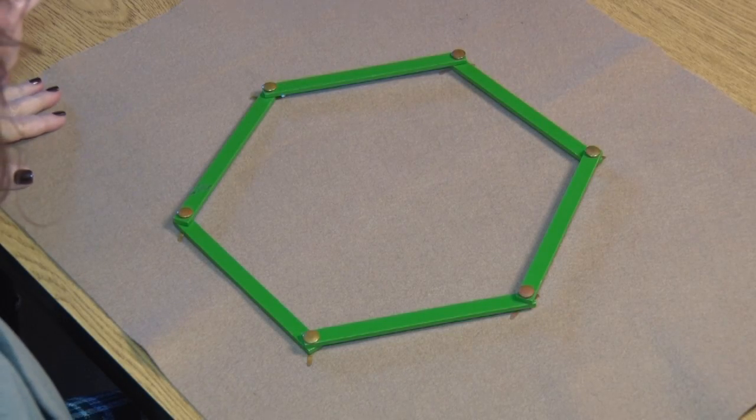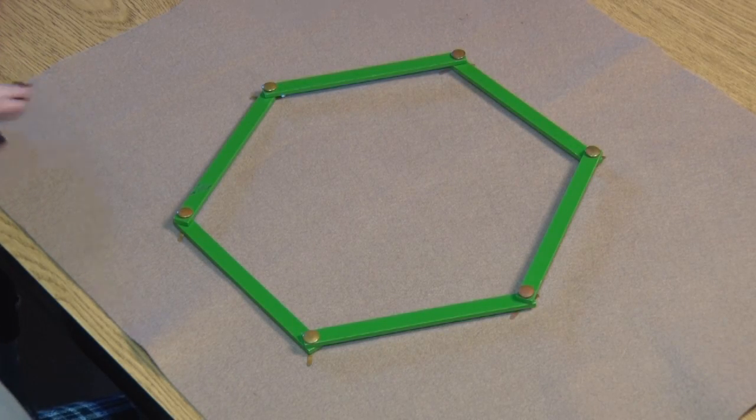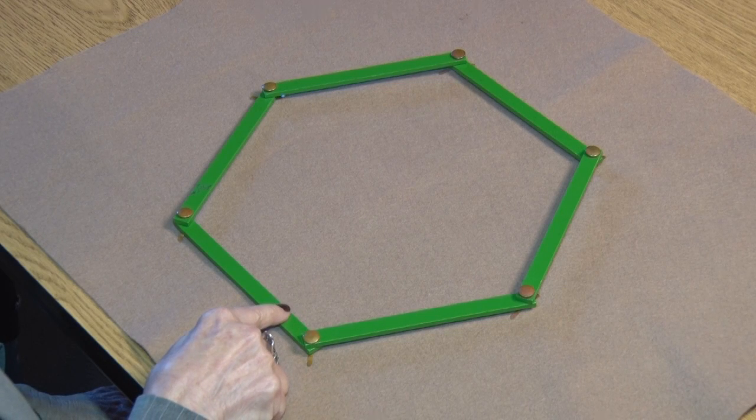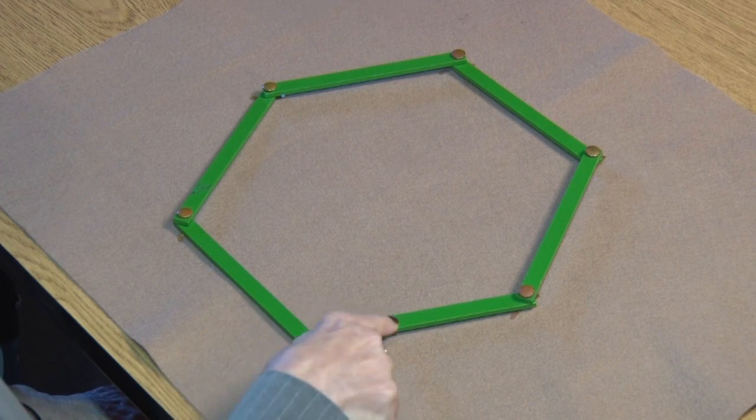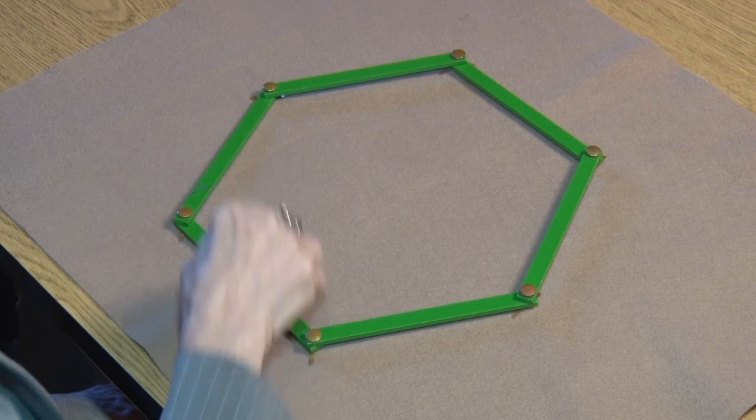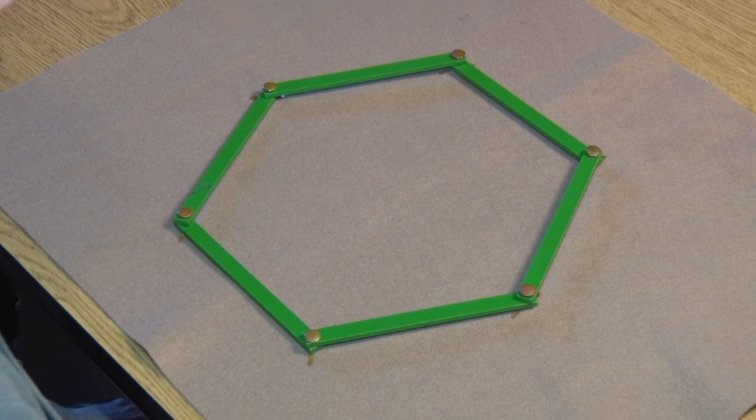This lesson is called Parts of a Regular Polygon. This is a regular polygon. It has six sides, which makes it a hexagon.